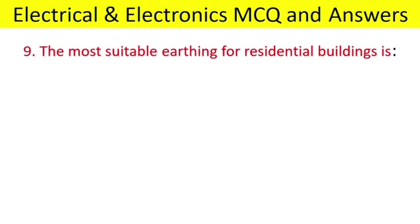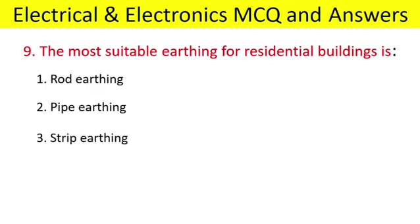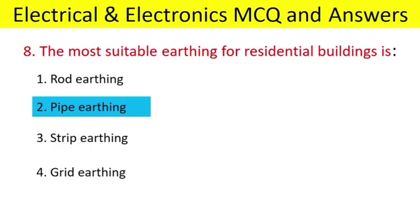The most suitable earthing for residential building is: rod earthing, pipe earthing, strip earthing, grid earthing. Answer: pipe earthing.